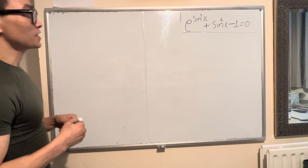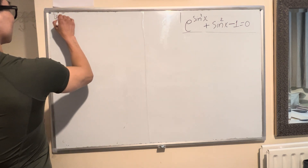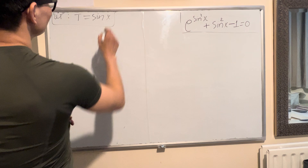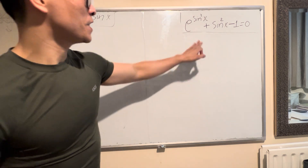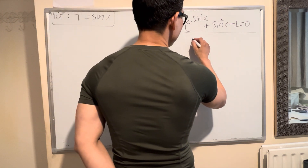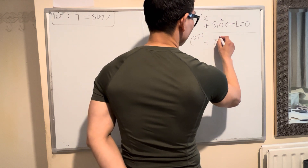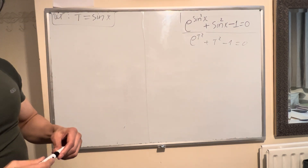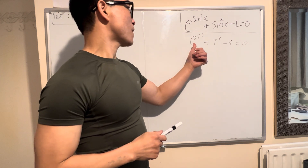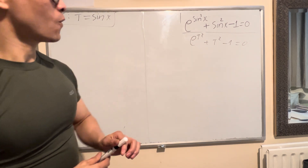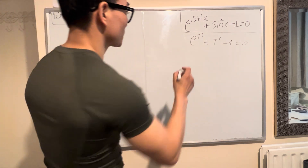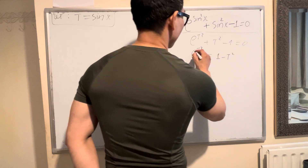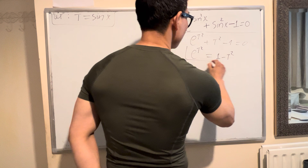First, I will let t equal sin(x), so I substitute here and I have a new equation: t squared plus this. I get e to the power of t squared on its own on the left-hand side, and I move everything to the right-hand side, and I get the equation: e^(t²) equals 1 minus t squared plus t squared.